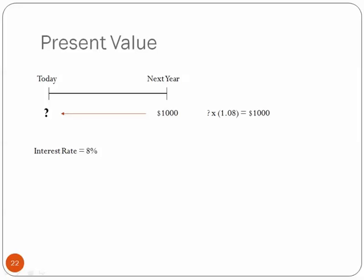So let's just rearrange this. $1,000 divided by 1.08 equals $926. So $1,000 next year is equal to $926 today, given this interest rate of 8%.